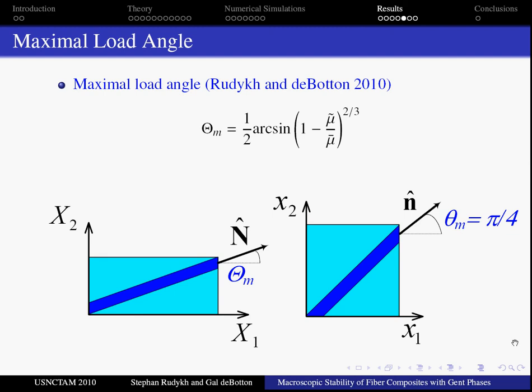The fibers rotate during an applied non-aligned loading. At some point, the angle reaches the value of one-fourth of pi. Then the compression in the direction of fibers switches to tension. So that if the critical value of the compression in the fiber direction is not reached before, the composite is stable.